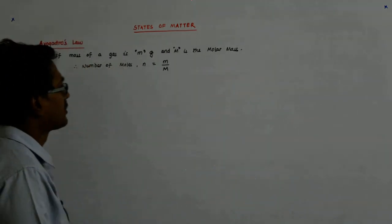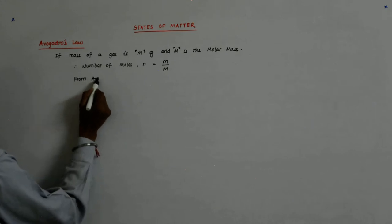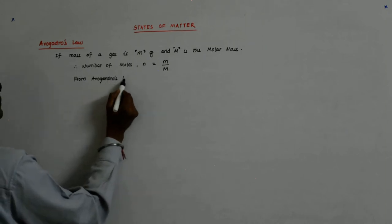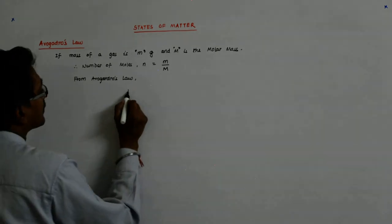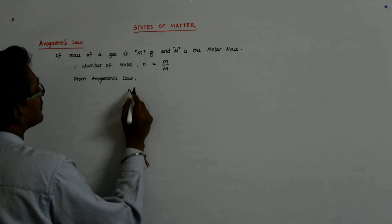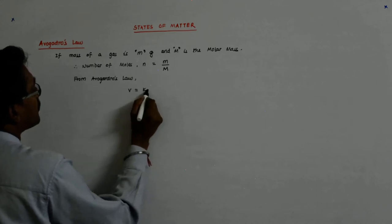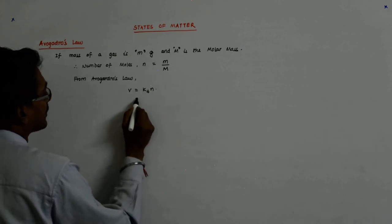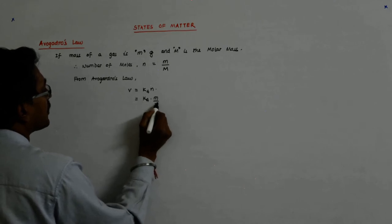Now from Avogadro's law, what happens? From Avogadro's law, I have v is equal to k4 times n. Now what does that mean? This means that k4 times m upon M.